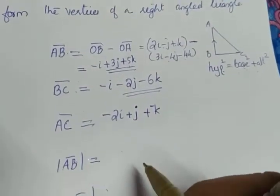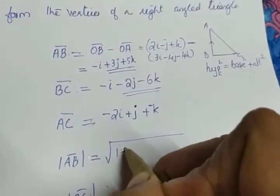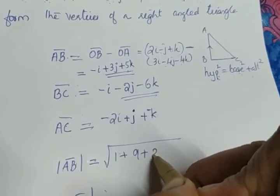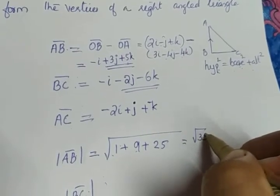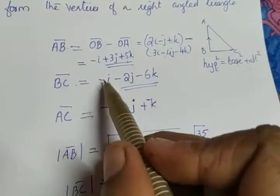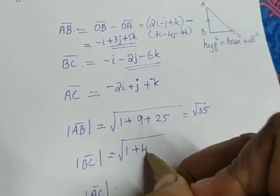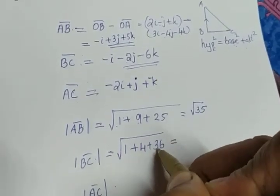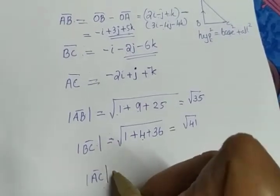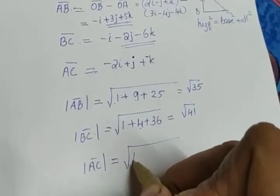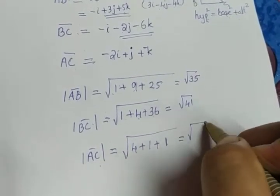Now we calculate the magnitudes. The magnitude of AB is square root of 1 squared plus 3 squared plus 5 squared, which is square root of 1 plus 9 plus 25, giving root 35. The magnitude of BC is square root of 1 plus 4 plus 36, giving root 41. And the magnitude of AC is square root of 4 plus 1 plus 1, giving root 6.